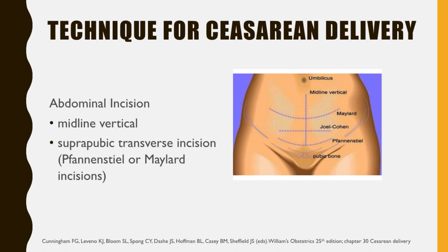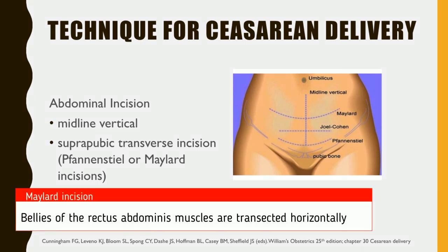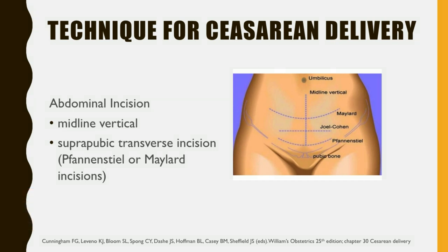With repeat cesarean delivery, re-entry through a Pfannenstiel incision is usually more time-consuming and difficult because of scarring. The Maylard incision differs mainly from the Pfannenstiel in that the bellies of the rectus abdominis muscles are transected horizontally to widen the operating space. It is technically more difficult due to its required isolation and ligation of the inferior epigastric arteries. Vertical infraumbilical incisions provide quick entry to shorten incision-to-delivery time.